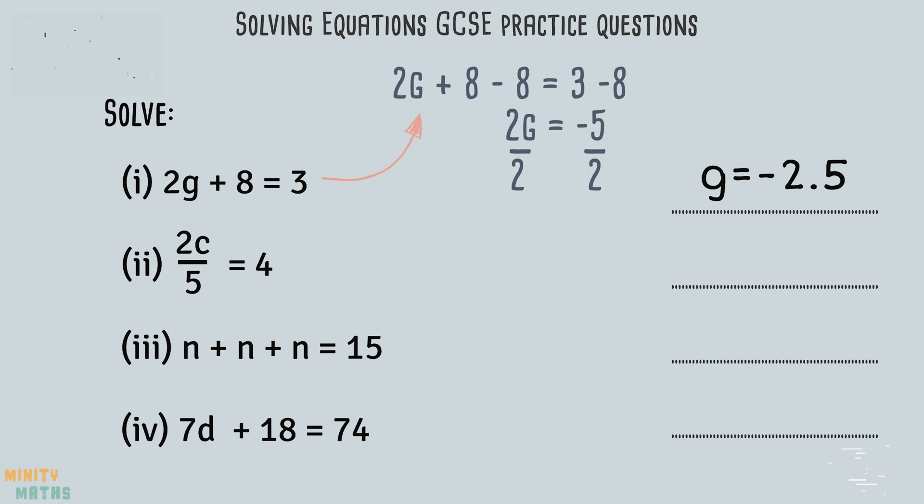For the second question, we need to firstly find out what 2c equals. So we can multiply both sides by 5 to get rid of the division. We then divide by 2 to find out what 1c equals.